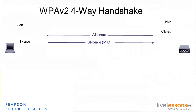That message integrity check is a calculation of the frame derived from the knowledge of the PMK. This is important because the MIC — a sort of checksum of the frame — is computed using the PMK. That means it proves that the client has the right PMK. The access point is going to read the frame, read the SNonce, and verify that the checksum matches what the AP would compute with its own copy of the PMK. And if they match, it means the client has the PMK, and we can continue.